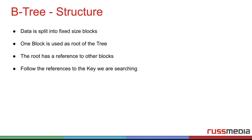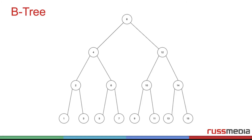The structure of a B tree: the data is split into fixed-sized blocks. One block is used as the root of the tree. The root has references to other blocks; we can follow these references to the keys we are searching. Here we have a tree.